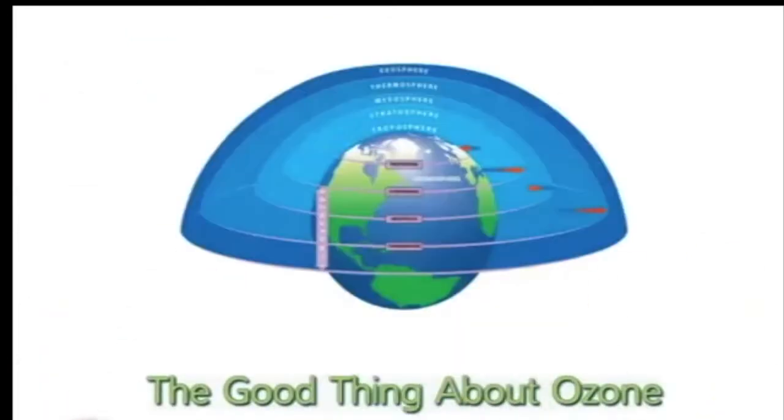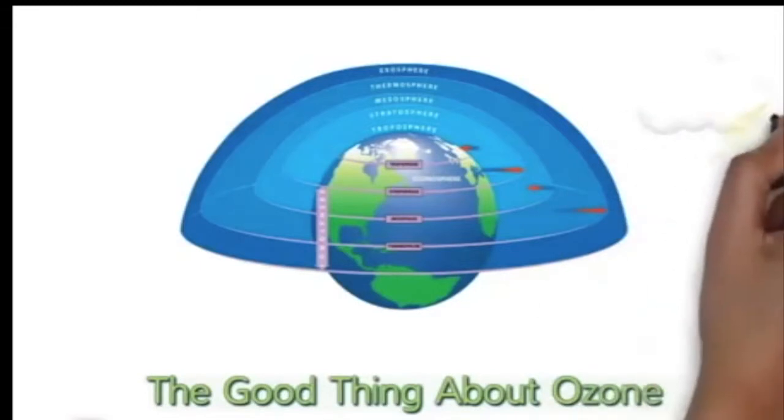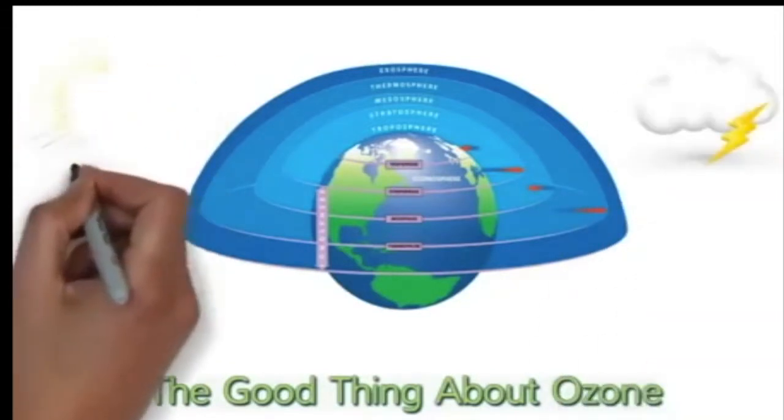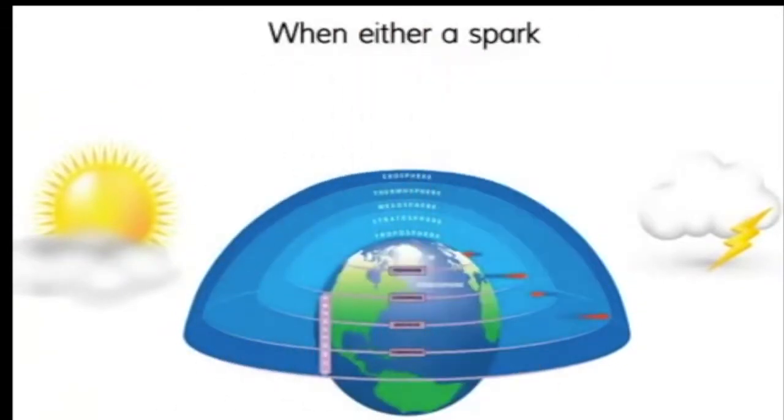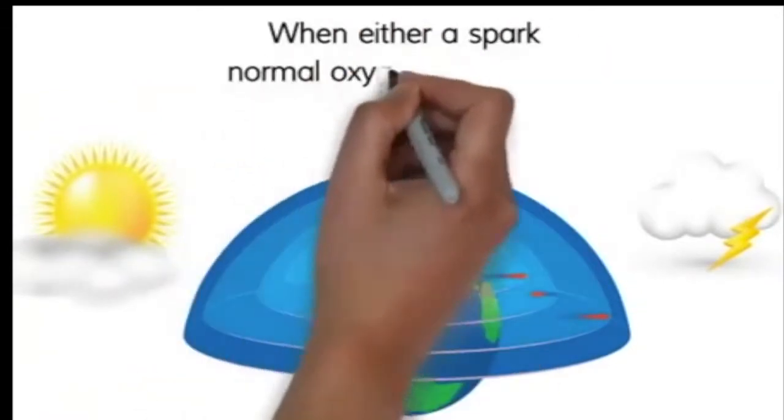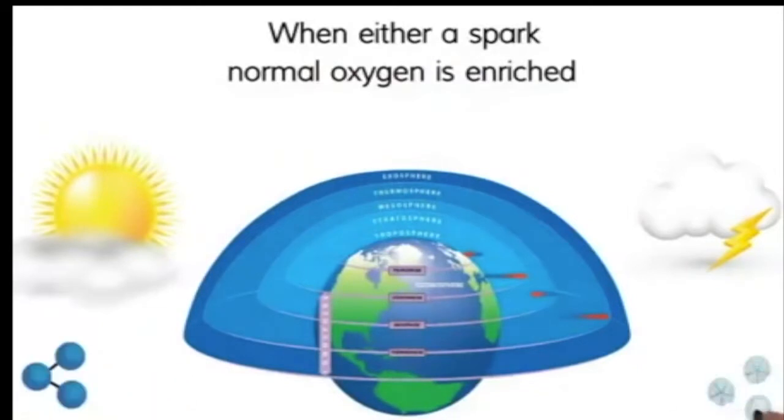You see, ozone is a gas. Ozone is created either when there is an electrostatic spark or when sunlight shines in an oxygen environment. When a spark, like a lightning bolt happens, normal oxygen is enriched, making ozone.